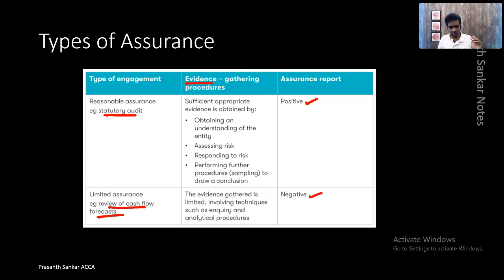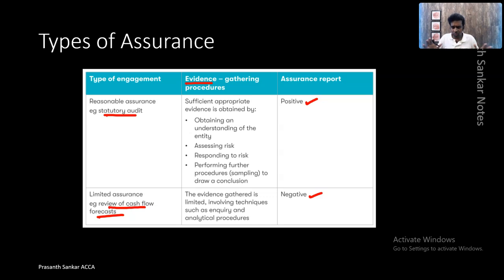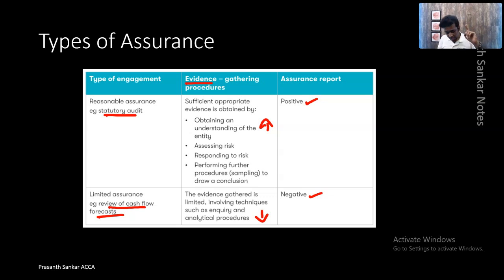Because we are giving only less opinion in limited assurance — we are not saying it's good, we are just saying it's not bad. To say whether it's not bad, you don't need to do much work; you can do less work, so you gather less evidence. For reasonable assurance, if you want to say it's good, you will obtain more and more evidence, meaning more work. Reasonable assurance is more work; limited assurance is a lesser degree of work.